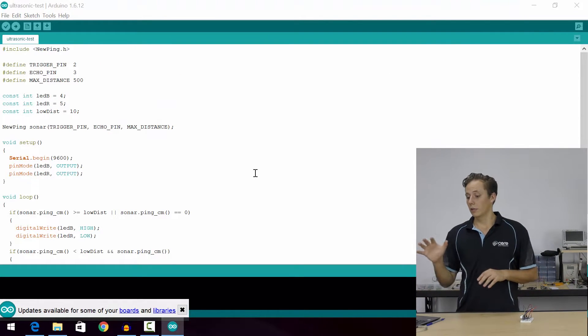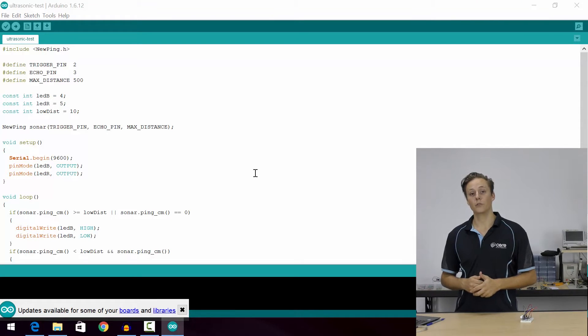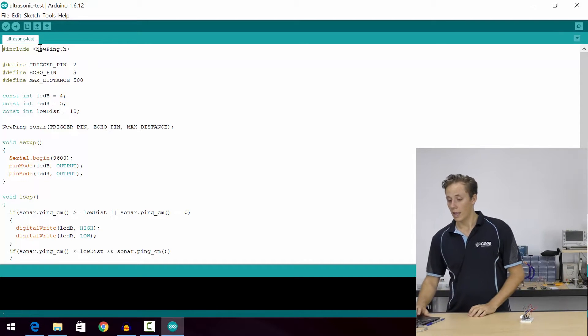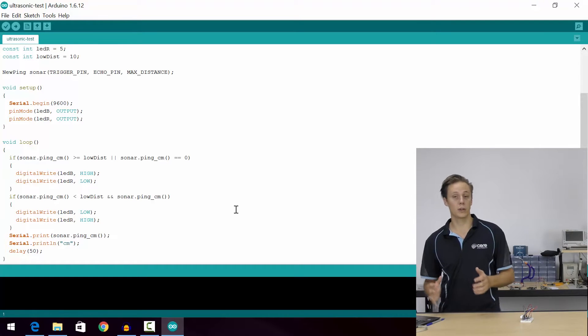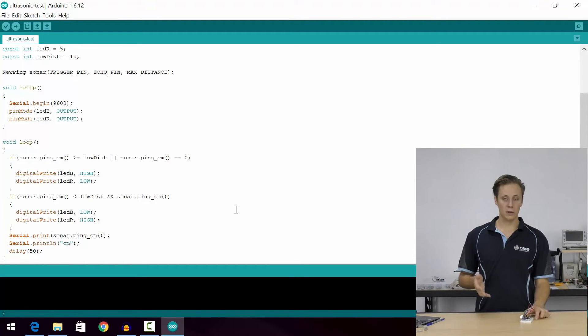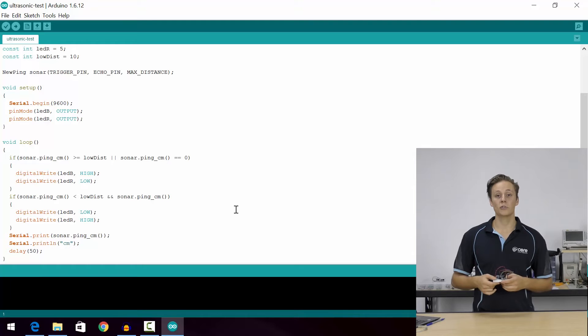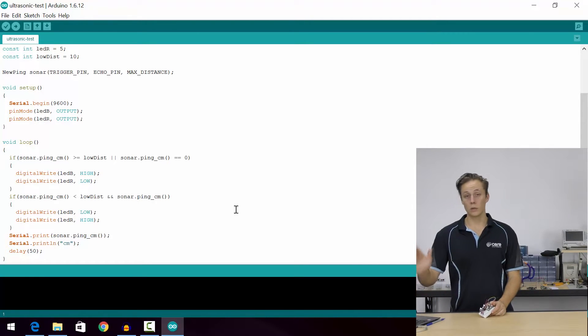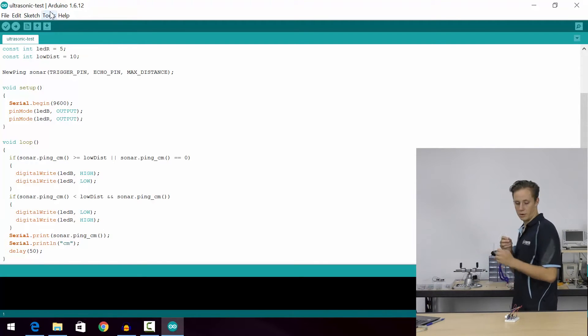We've got our library inclusion, some definitions - so you define the trigger pin and the echo pin and the maximum distance that you would like it to receive. I've got some LED definitions and a low distance, which we're going to use as a trigger. We're going to make a simple distance trigger. So when something comes in between the ultrasonic sensor and whatever it was measuring, let's say it triggers within 10 centimeters, then our low distance would equal 10. We're going to be measuring in centimeters. Initializing a serial, so we can get a read output of the sensor. Let's connect this up and we can get cracking.